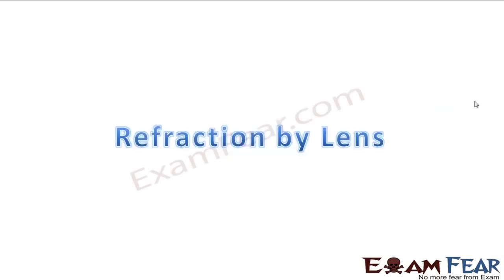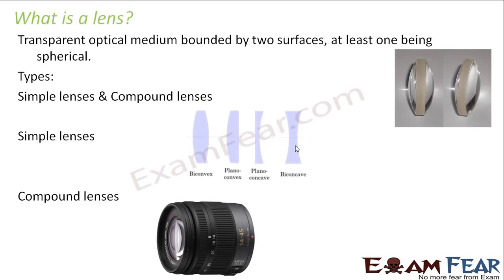Now that we have studied refraction by spherical surfaces, it is time that we introduce the lens. So we will now study the refraction of light by lens. Before studying this phenomenon, it is good to know what a lens is. A lens is a transparent optical medium bounded by two surfaces, at least one being spherical.